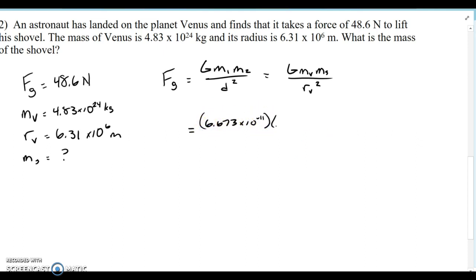The mass of Venus is 4.83 times 10 to the 24. The mass of the shovel we don't know—we'll leave it as a variable. In the denominator, we have the radius, 6.31 times 10 to the 6, and that's squared.